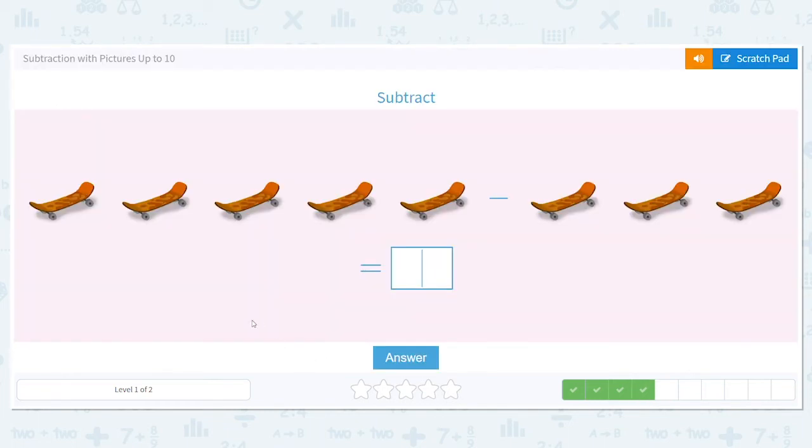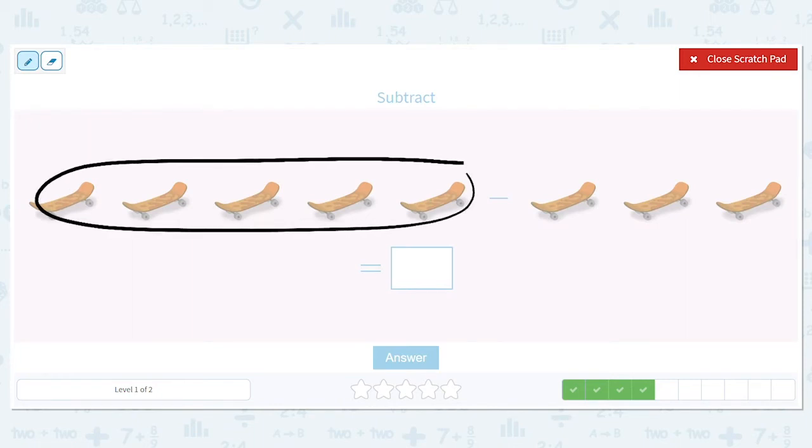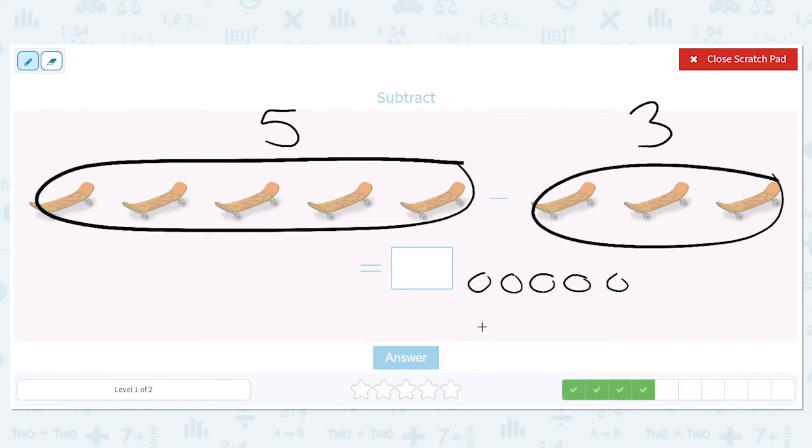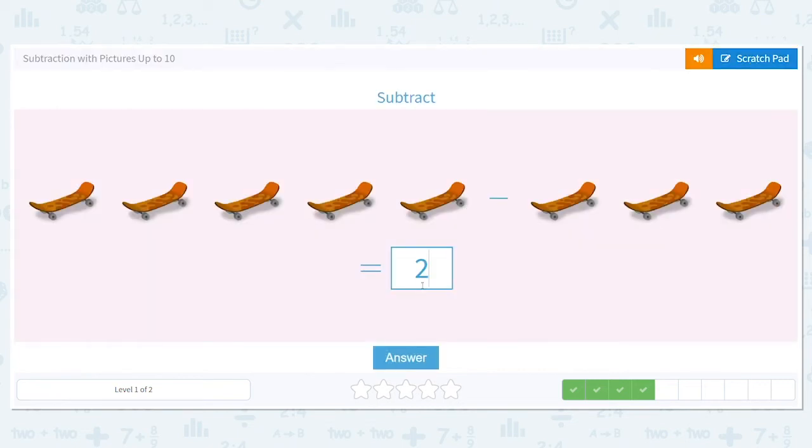Now we have skateboards. Let's circle our first set of skateboards and count them. One, two, three, four, five. Five skateboards here. Let's look at our second group. How many skateboards are there? Right. There's three. So this time we're doing five minus three. Going to make how many circles? Five. We're starting with five skateboards. How many will I take away? Am I taking away five or am I taking away three? Three. Good job. So we cross out three. One, two, three. So how many do I have left? Two. Excellent job.